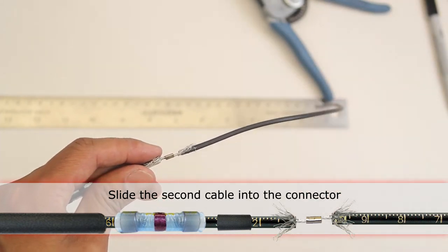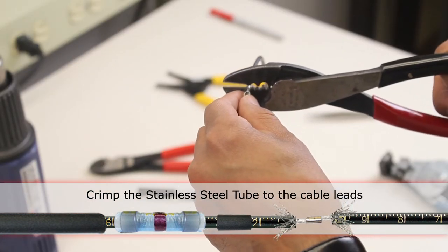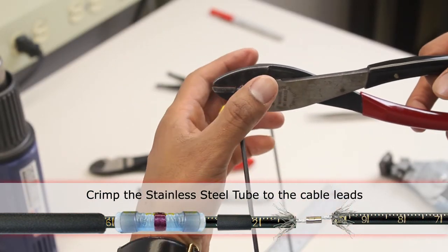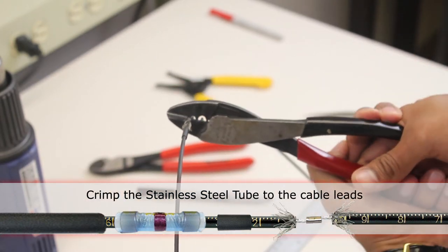Then using this crimping tool for a slot, put it in. Try to crimp it. Make sure both the connections are tight in there. Crimp it.